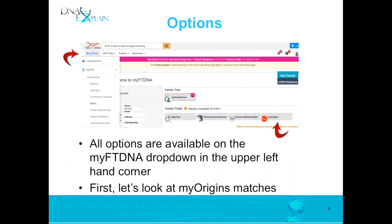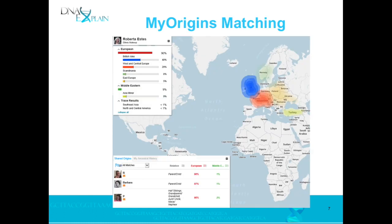Let's look at options. All the options for Family Tree DNA are available under the drop-down at the top — Y, mitochondrial, Family Finder, whatever testing you've done. But over here under the Family Finder section on your home page, the first thing we're going to look at is MyOrigins matching. How many of you know that there is matching in MyOrigins? Not very many — MyOrigins has matching in there and people don't know that.